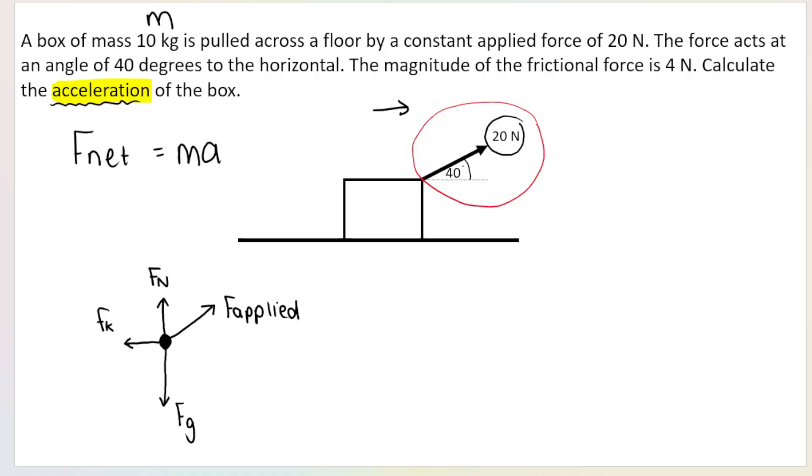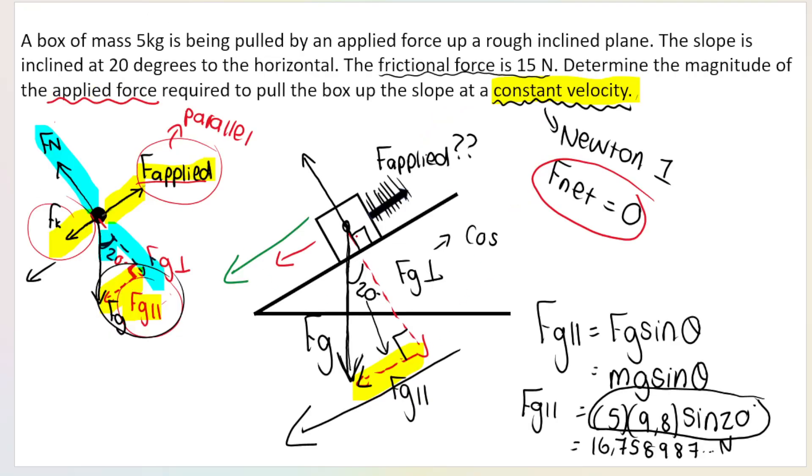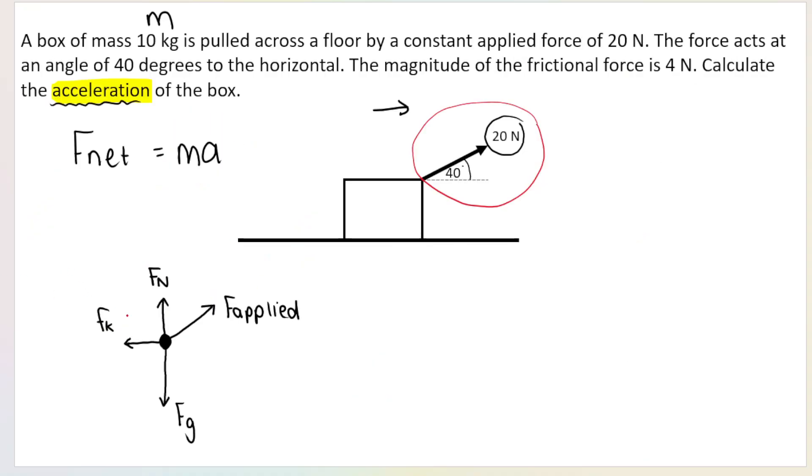Remember that if a box is on an incline, then it's the weight that we break up into components like we did in this question. Fg perpendicular, Fg parallel. This video will be linked in the description box below as well. So in this question, F applied is acting at an angle. So we've got this component, which is F applied parallel because it's parallel to the surface. And this one that's going up, which is F applied perpendicular because it's perpendicular to the surface.